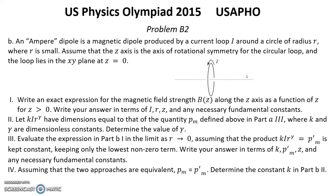Question 3: Evaluate the expression in Part B1 in the limit as R→0, assuming that the product K·I·R^γ = PM' is kept constant, keeping only the lowest non-zero term. Write your answer in terms of K, PM', Z, and any necessary fundamental constants. Question 4: Assuming the two approaches are equivalent (PM = PM'), determine the constant K in Part B2.